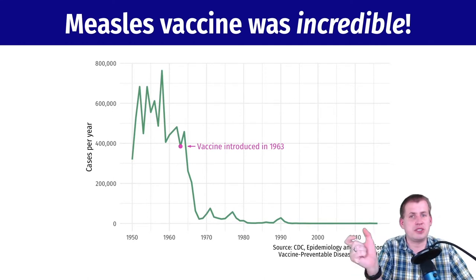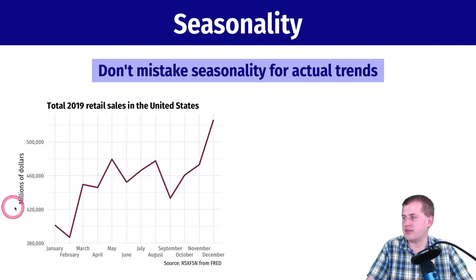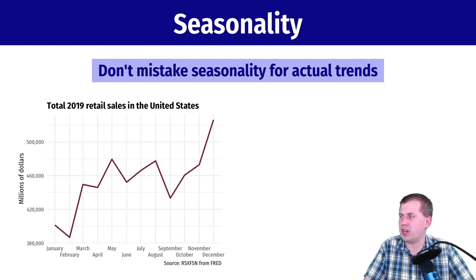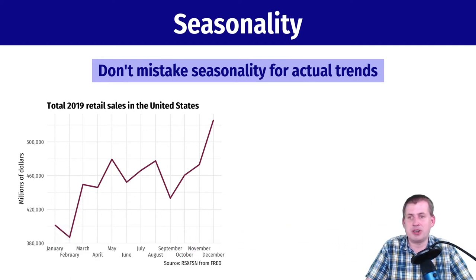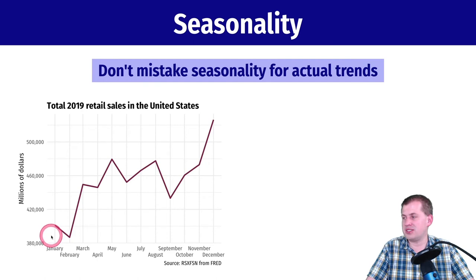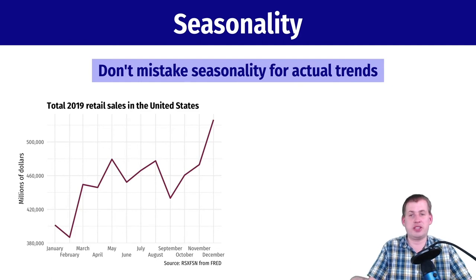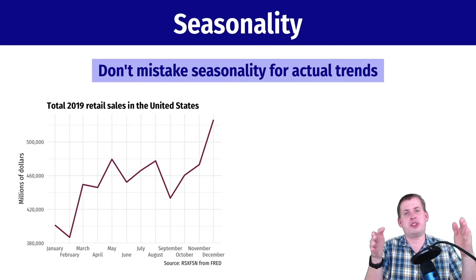The other thing to watch out for with start and end times is seasonality. Looking at actual U.S. retail sales for 2019 in millions of dollars, if we only look from January to December, it looks like sales were poor in January and by December were awesome and going up. You might conclude that some policy during those months caused the increase and should be continued — but that would be a mistake.